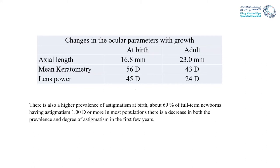This table shows the change in parameters with growth. The axial length is about 17 mm at birth, then becomes 23 mm in the adult. Keratometry is 56 at birth, then decreases to 43 in the adult. Lens power is 45 at birth, then decreases to 24 in the adult. Also, there is a high prevalence of astigmatism at birth — about 70% of full-term newborns have astigmatism of one diopter or more — which decreases in prevalence and degree during the first few years.